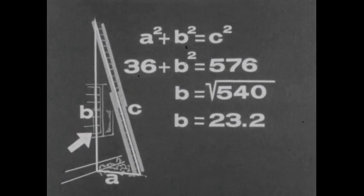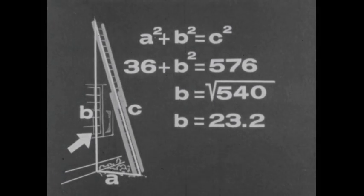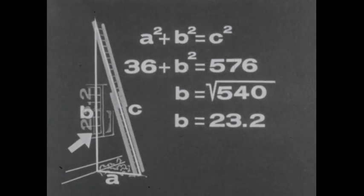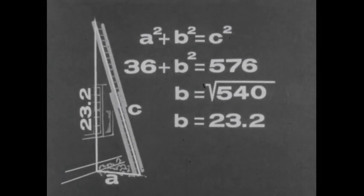Side B, the distance from the ground to the point where the ladder is resting against the wall, is 23.2 feet.